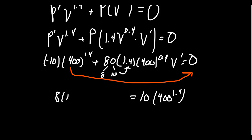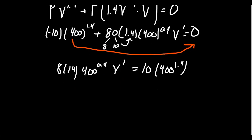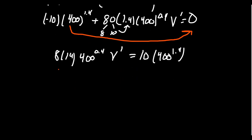400 to the 0.4 power, and then times that by V prime. We then need to divide both sides of the equation by this coefficient. Divide both sides by the 8 times 14 times 400 to the 0.4. And so now we're going to see that our lazy computation actually paid off.